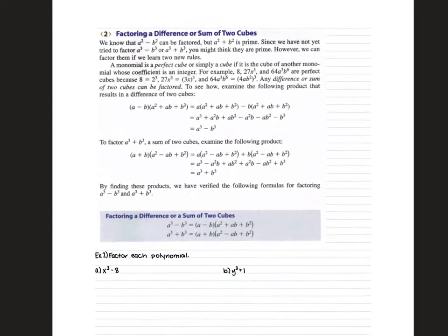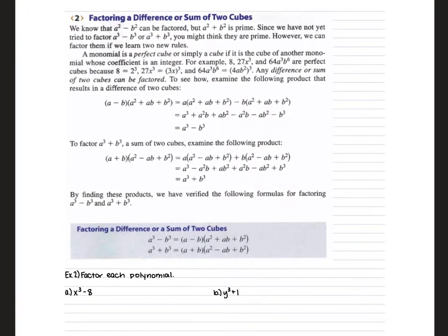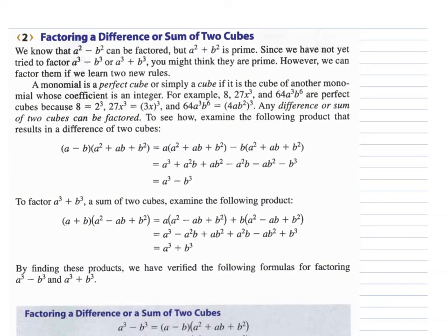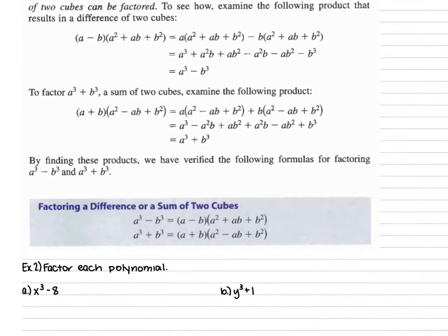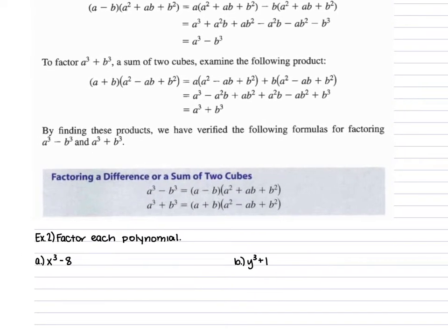There are other ways to factor polynomials. Sometimes you'll be given a binomial where you have a first and second term that you can take the cube root of. When you have these, it's called factoring a difference or a sum of two cubes. You will use a formula.